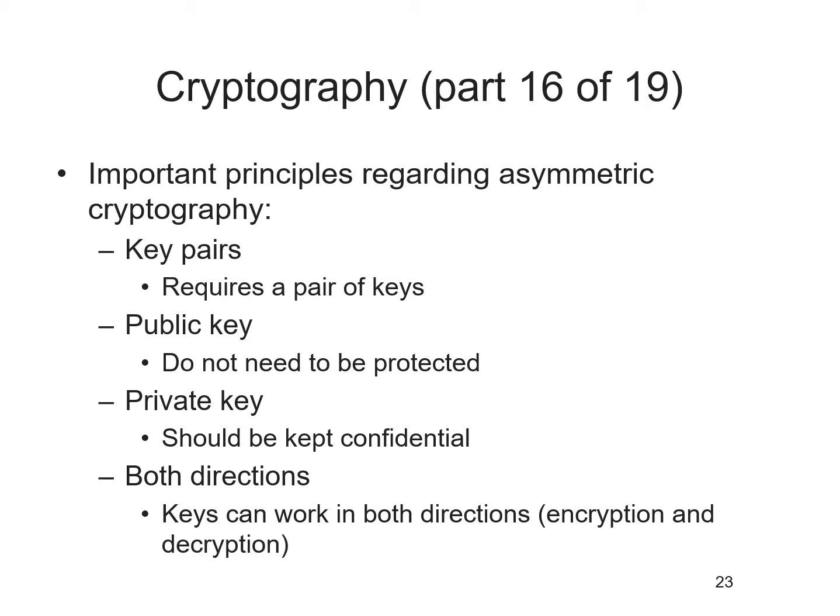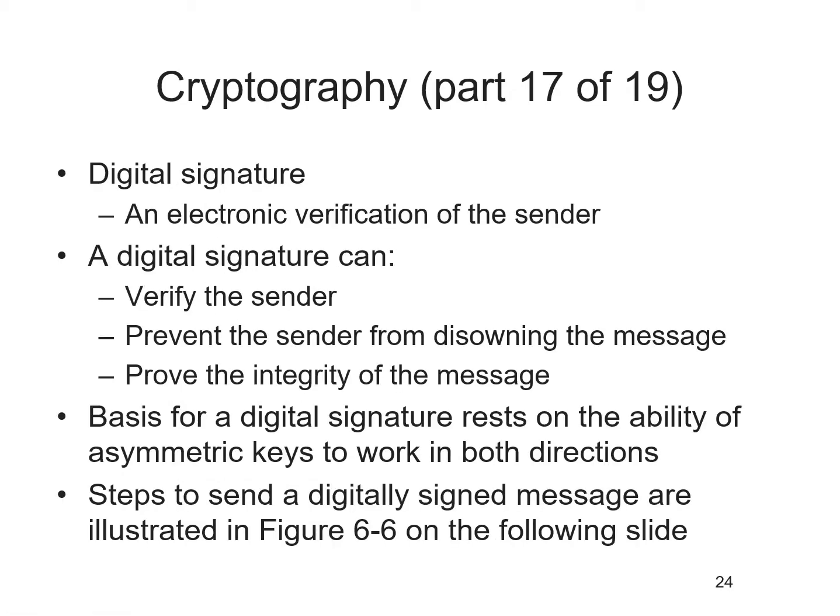Asymmetric cryptographic keys can work in both directions: a document encrypted with a public key can be decrypted with the corresponding private key, and vice versa. This means asymmetric cryptography can also provide proof of the sender's identity and verify that data has not been intercepted or altered. For example, if Alice receives an encrypted document that claims it came from Bob, she can verify that — this is what we call a digital signature.